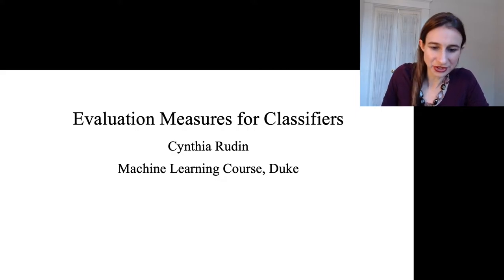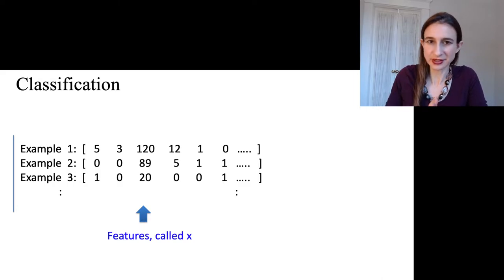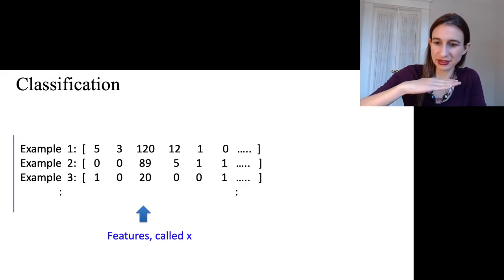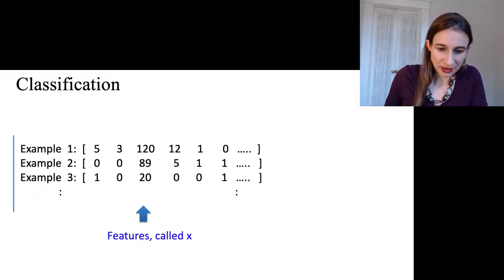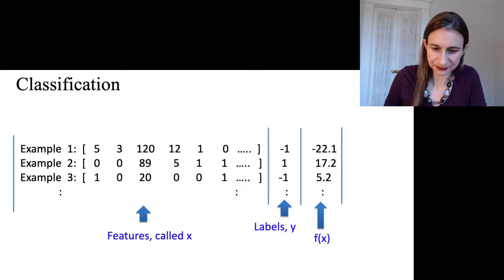I'm going to talk about evaluation measures for classifiers, and I'm going to start with our basic setup where we have the observations along the rows, and then we have the features in the columns, and we have our labels for each observation, and then we have our predictions which come from our classifier.